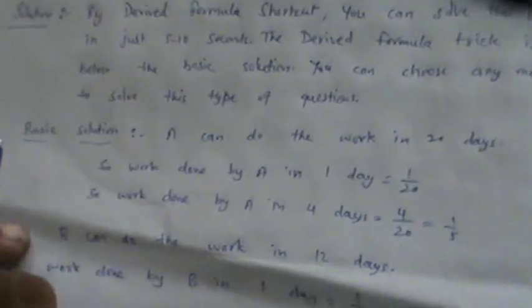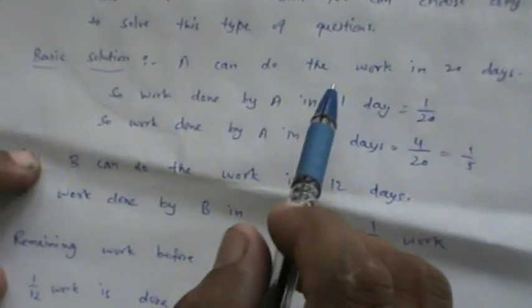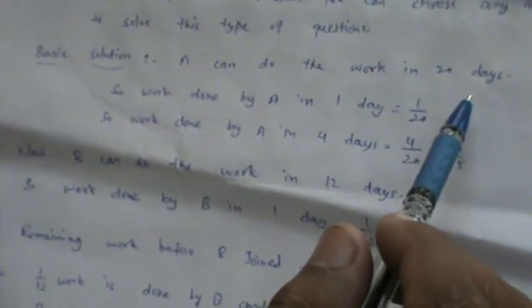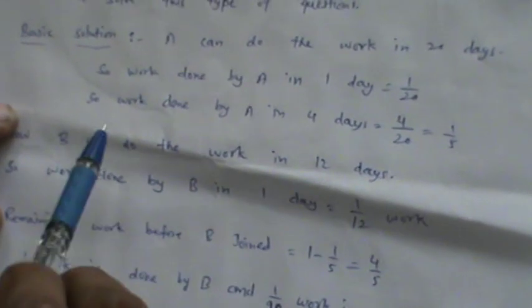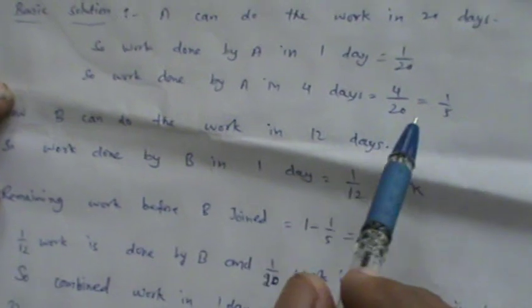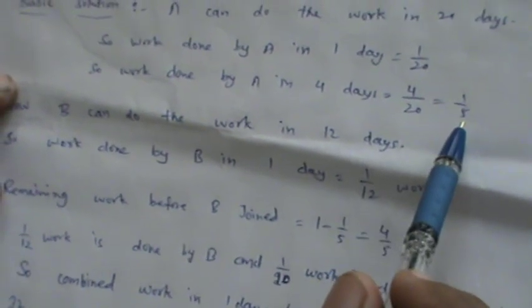So the basic solution is: A can do the work in 20 days as given. So work done by A in 1 day is 1 over 20. The work done by A in 4 days is 4 over 20 is equal to 1 over 5.